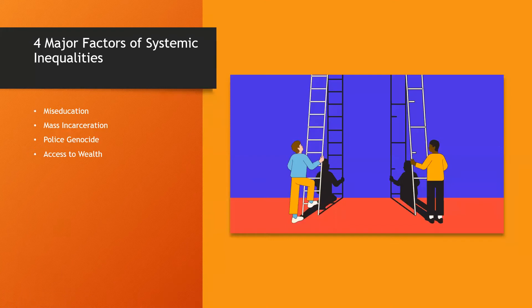There are four major factors when it comes to systematic inequalities. First one is miseducation. Secondly, mass incarceration. Thirdly, police genocide. And last, access to wealth. Though there are many other different factors when it comes to inequality, these are some that I thought were important to go over.